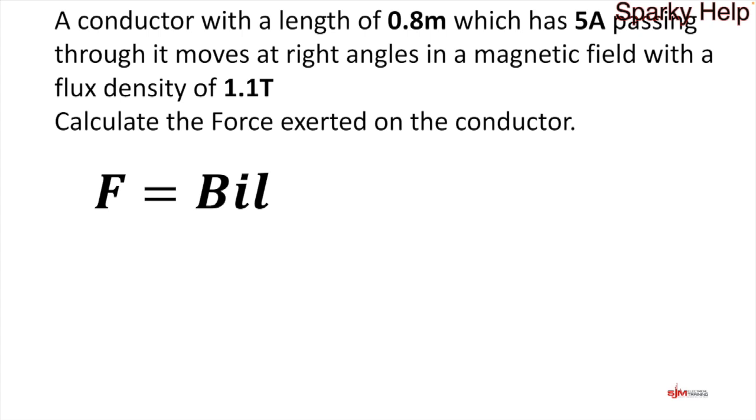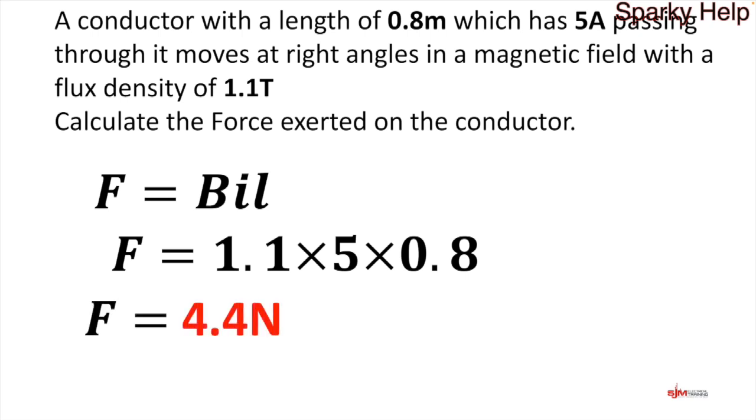There we've got our formula. What's it trying to work out? They're asking to work out the force, so it's got to be a straightforward B I L. Therefore we put the numbers in: 1.1, making sure the units are correct. 5 amps is the current and the length is in meters so it becomes 0.8. So it gives us 4.4 newtons of force on this particular conductor.